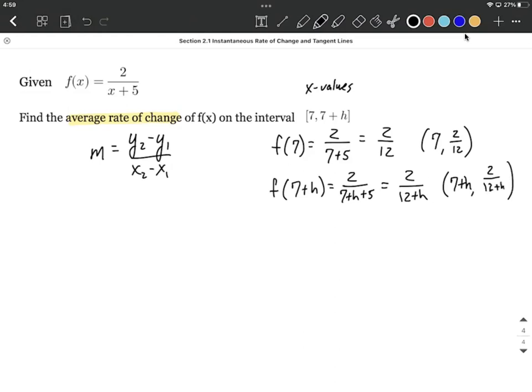Alright, now we have an x1 value, and a y1 value, an x2 value, and a y2 value. So from here, let's go ahead and try to find that average rate of change by using the slope formula. So I'm going to go with 2 over 12 plus h, that y value minus 2 over 12, divided by 7 plus h minus 7.